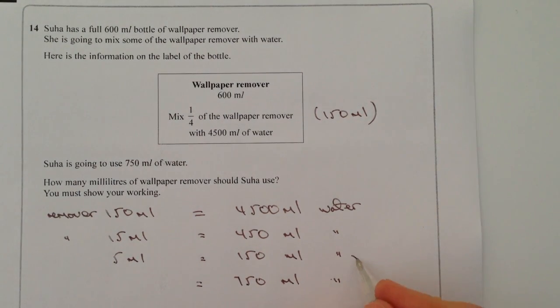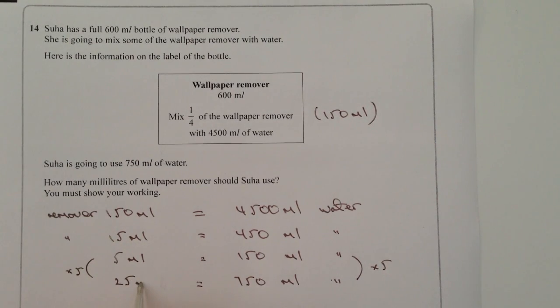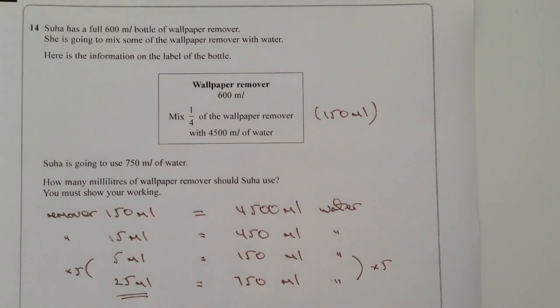So that's ideal because I've multiplied that through by 5. So what I'm going to do is I'm going to multiply this side by 5 and that will give me 25ml. So in other words the answer to the question is 25ml of wallpaper remover for 750ml of water.